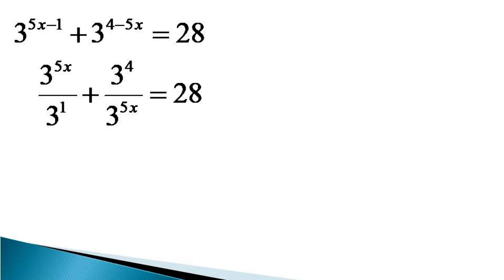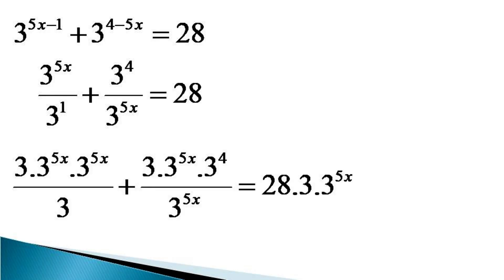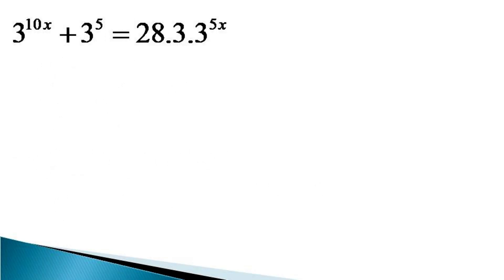Now in order to linearize this equation, that is to remove the fractions, we multiply both sides by 3 into 3 raised to the power 5x. This multiplication results in 3 into 3 raised to the power 5x into 3 raised to the power 5x divided by 3, plus the second term, becoming equal to 28 into 3 into 3 raised to the power 5x. This can be simplified as 3 raised to the power 10x plus 3 raised to the power 5 is equal to 28 into 3 into 3 raised to the power 5x.